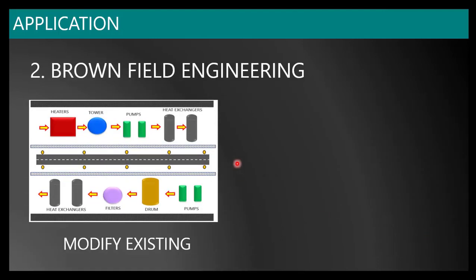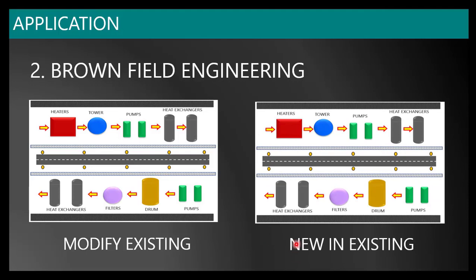In brownfield engineering, if you have any requirement to modify existing equipment or existing piping, or if you want to change the pipe rack, whatever modification you do in the existing field is known as brownfield engineering. You may replace old equipment with new equipment — an old pump with a new pump, or an old heat exchanger with a new one. Installing new items such as new equipment or new piping in the existing field is also considered brownfield engineering. The fundamental difference is: modifying existing equipment versus installing new equipment within the existing field.